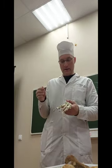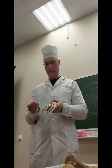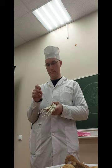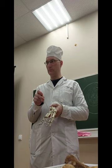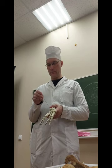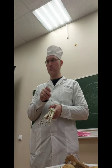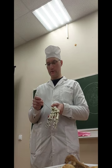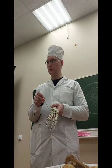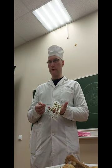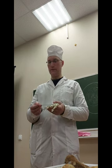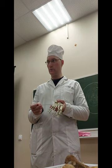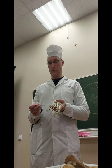Next bones: proximal row, then distal row. In front of talus: os naviculare. In front of calcaneus: os cuboideum. And three bones in a row: os cuneiforme mediale, os cuneiforme intermedium, os cuneiforme laterale. Pay attention that laterale is inside the foot, between the bones. Then metatarsus, then phalanges. And all these bones have basis, corpus, and caput.